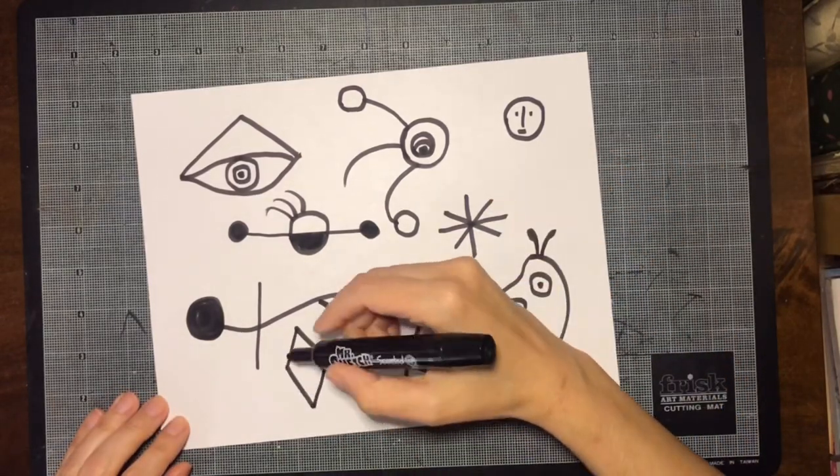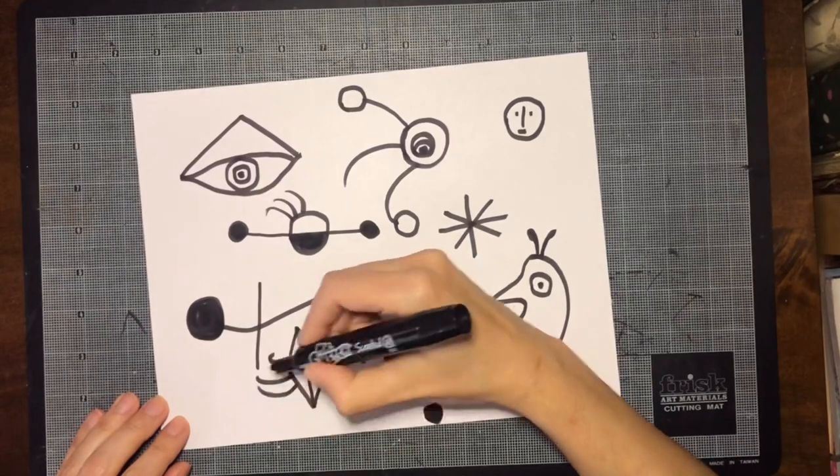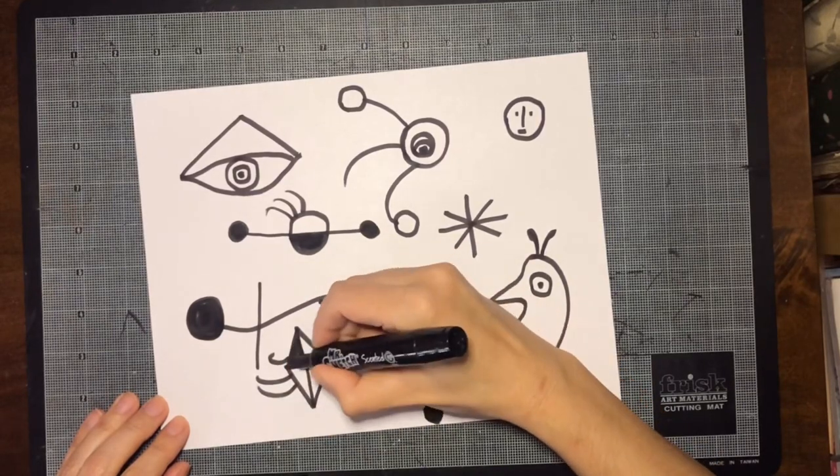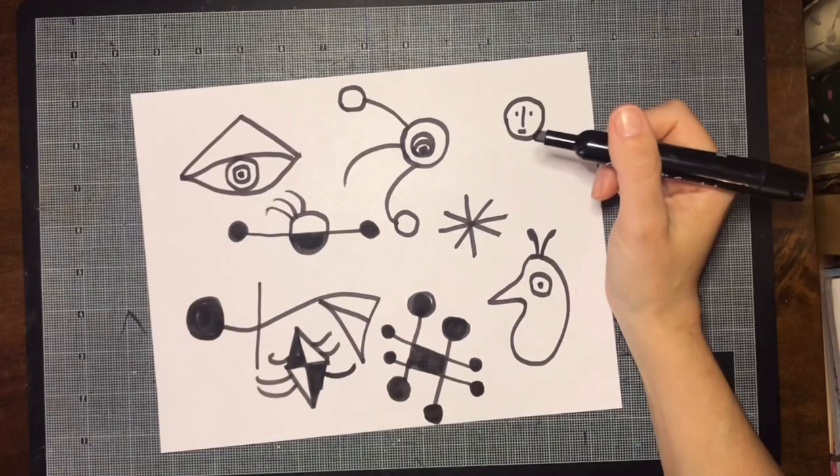Once you are done, you're going to place your image aside and we're going to do the second part of this project. I think I'm done. I'm going to take my other piece of white paper and my black marker again.